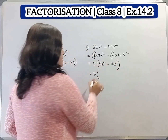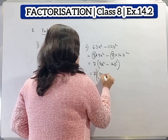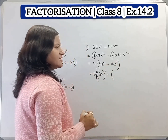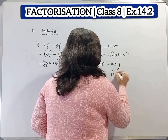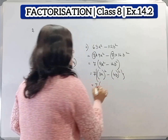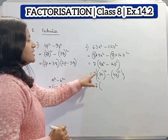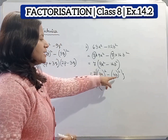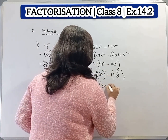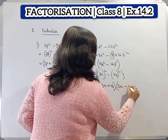Now 9a square we can write as 3a whole square, minus 16b square we can write as 4b whole square. Now we apply the identity a square minus b square, where a equals 3a and b equals 4b. So a plus b into a minus b means 3a plus 4b into 3a minus 4b.